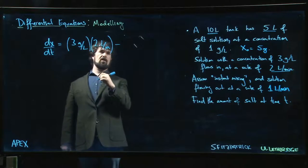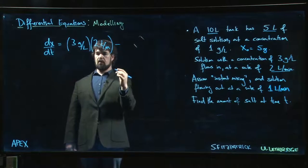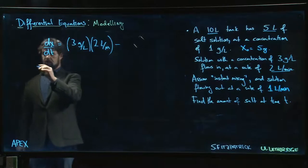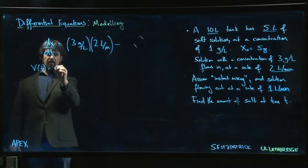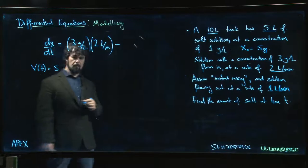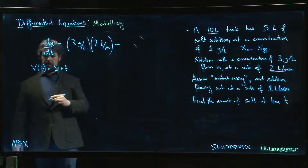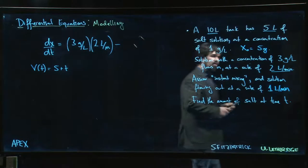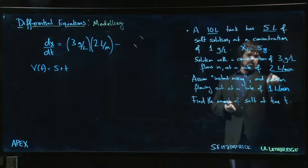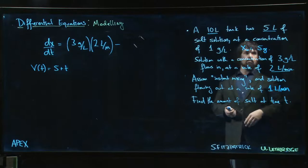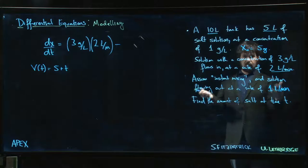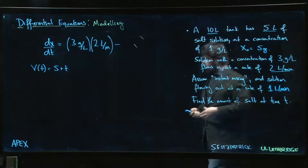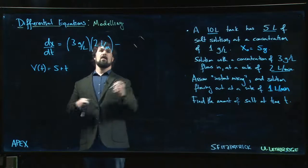For the rate out, we have to be a little bit more careful because now we say, what is actually the volume as a function of time? Well, we start with 5 liters and we can work it out. It's 5 plus t. Why? Because every minute that goes by, there's 2 liters coming in and 1 liter going out. After one minute, you've added 2 liters and removed 1, so there's an extra liter. After two minutes, you've added 4 liters and removed 2, so there's 2 extra liters. The concentration is going to be x grams...